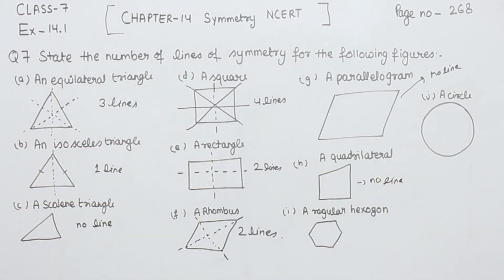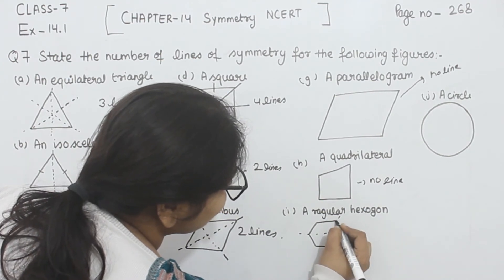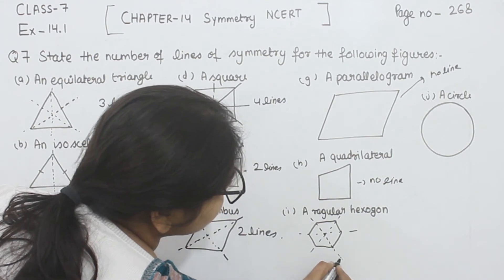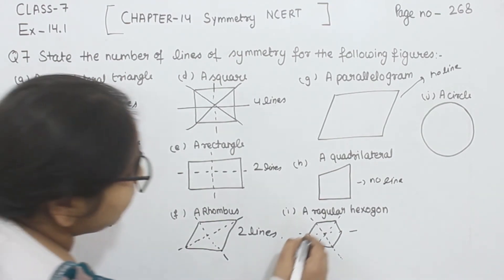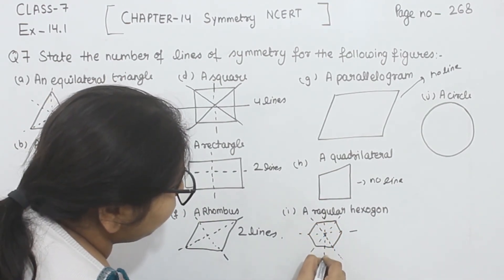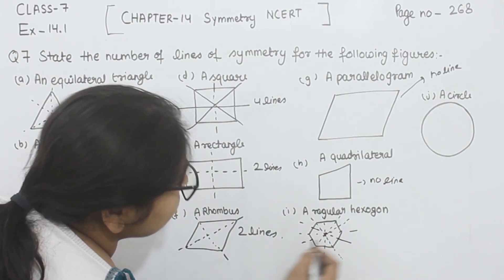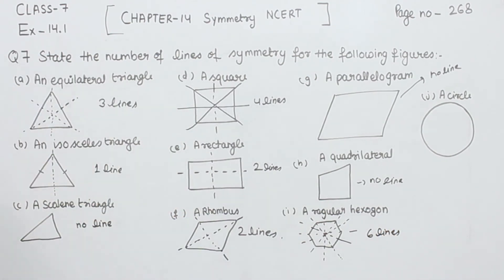Now, comes to the regular hexagon. In this one, all the sides are equal to each other. So we will create here one, two, three — these are three symmetry lines. Now we can create six more: four, five, and six. So it will have six lines of symmetry.